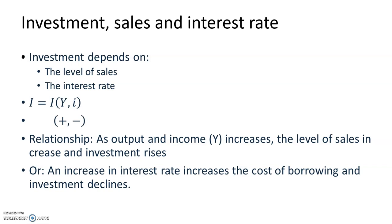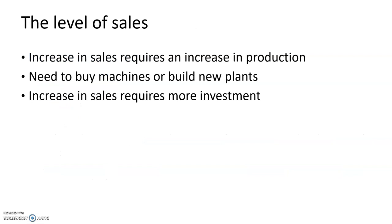Therefore, as output and income increase, the level of sales increases and investment rises. Or, an increase in the interest rate increases the cost of borrowing and investment declines. Consider a firm facing an increase in sales and needing to increase production. To do so, it may need to buy additional machines or build additional plants — in other words, it needs to invest.